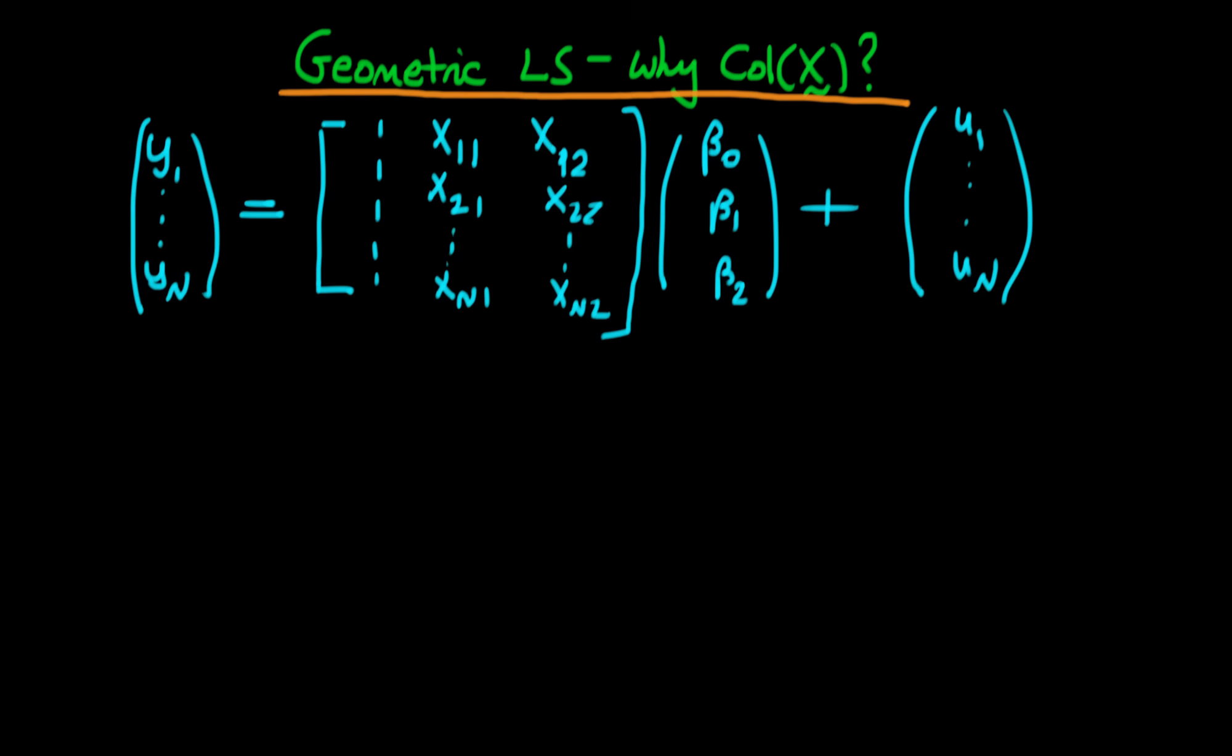I've spoken about how we can regard this matrix as a particular vector space and I spoke about the column space of this particular vector. But why was it actually the case that I could think about it in this manner? Well, it becomes more apparent if we rewrite this matrix as a matrix of vectors.